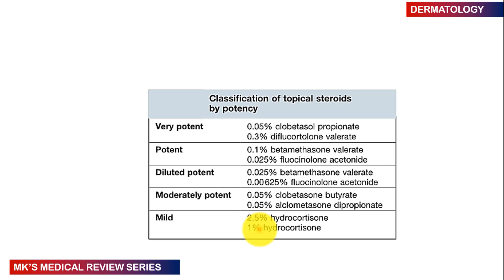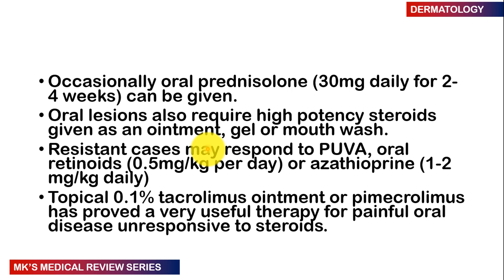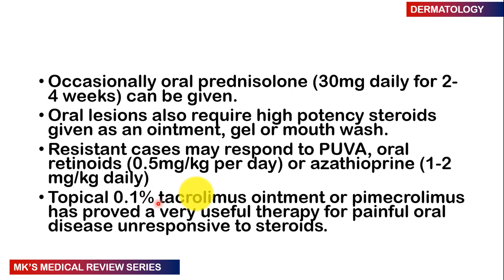Take time to look at the concentrations of topical creams. Occasionally, oral corticosteroids may be given — oral prednisolone about 30mg daily for two to four weeks. Oral lesions also require high potency steroids given as an ointment, gel, or mouthwash. Resistant cases may respond to PUVA (psoralen and ultraviolet A). You may also give oral retinoids at 0.5mg/kg/day, or acitretin at 1–2mg/kg daily. Topical tacrolimus 0.1% ointment has also been useful for painful oral disease unresponsive to steroids.